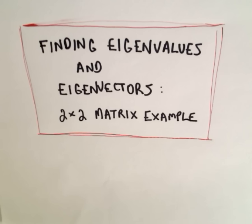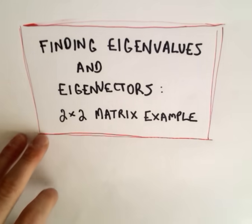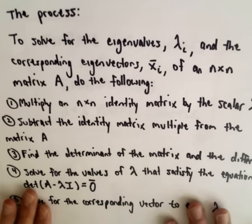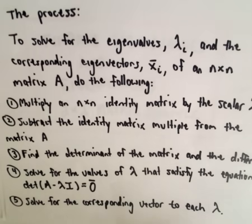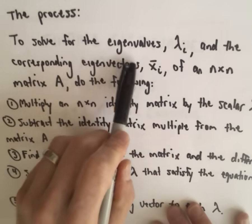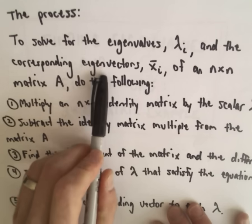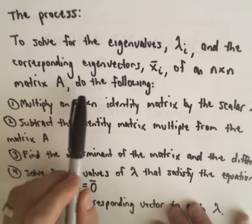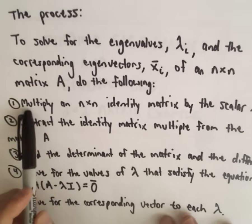In this video I'm going to look at an example of finding eigenvalues and eigenvectors for a 2 by 2 matrix. This certainly generalizes to any n by n matrix, but the arithmetic can get very tedious, especially if you're doing it by hand. But this is the basic process. To solve for the eigenvalues lambda sub i and the corresponding eigenvectors x sub i of an n by n matrix A, we'll do the following.